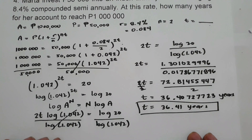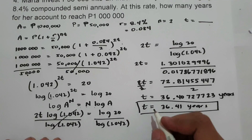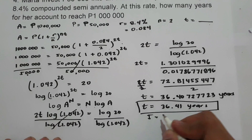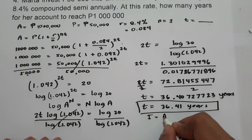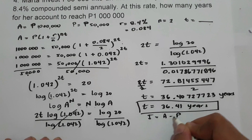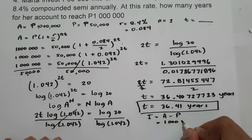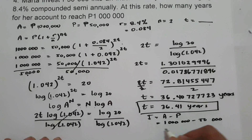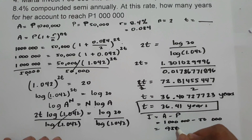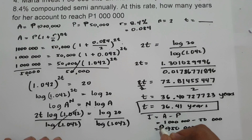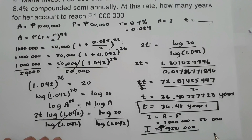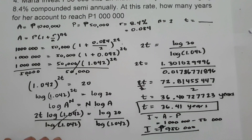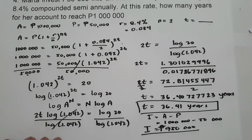To find the interest, interest equals future value minus principal, which is 1,000,000 minus 50,000, that is 950,000 pesos. This will be the interest after 36.41 years. I hope you learned from this lesson. See you again next time. Thank you so much for watching. God bless us all.